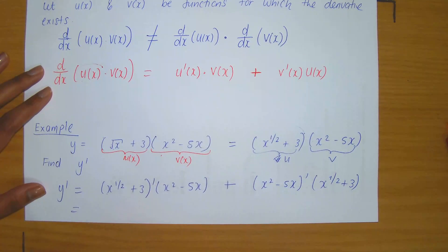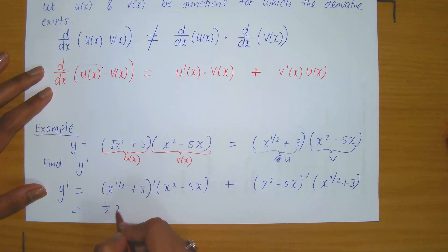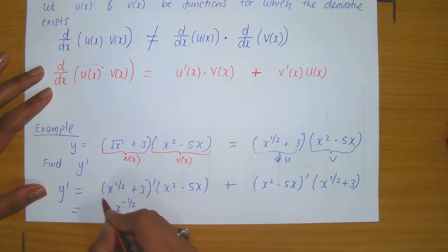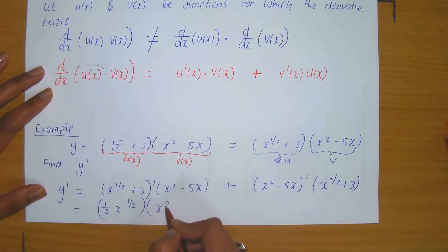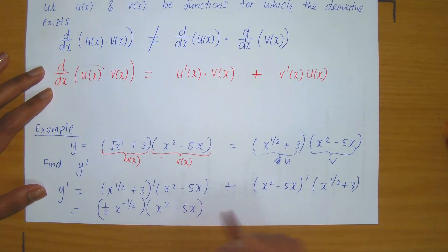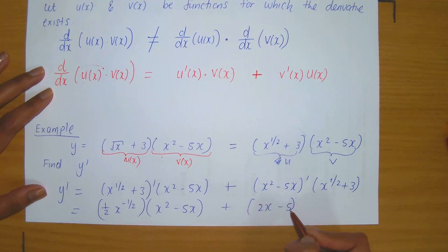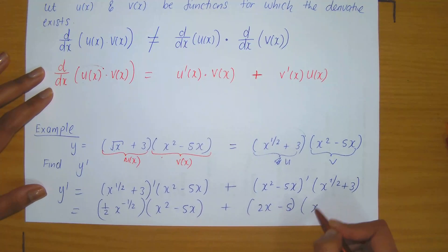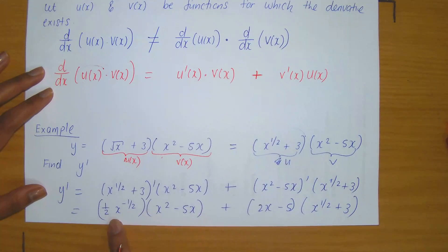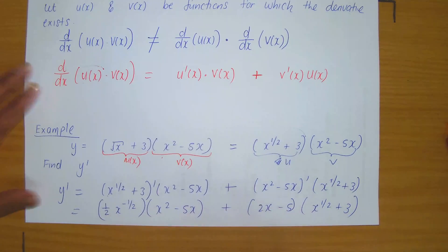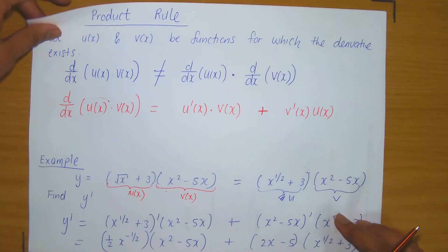Now computing the derivatives: the derivative of x to the power of one half plus 3 is one half x to the minus one half, and that is multiplied to x squared minus 5x. The derivative of x squared minus 5x is 2x minus 5, and it is multiplied to x to the power of one half plus 3. You could then distribute — multiply out the brackets and simplify. That is how you apply the product rule.